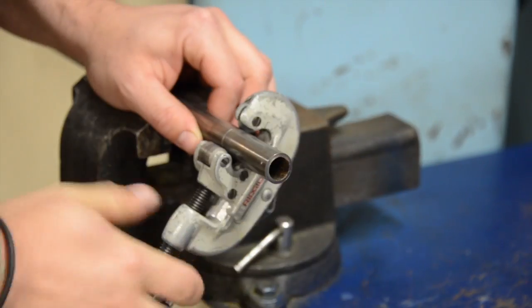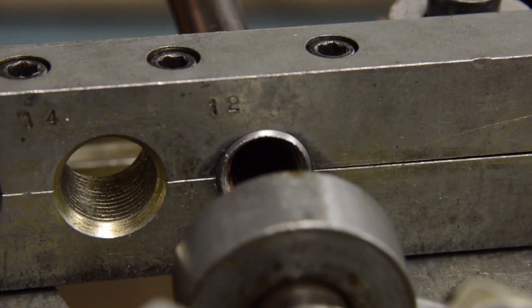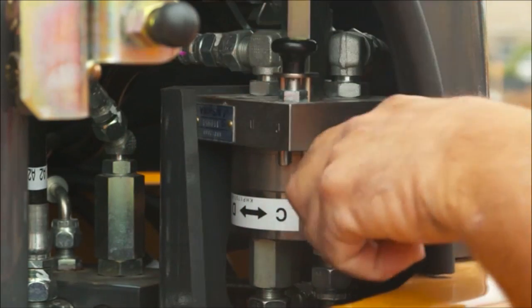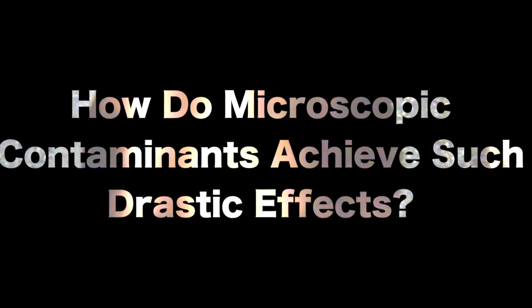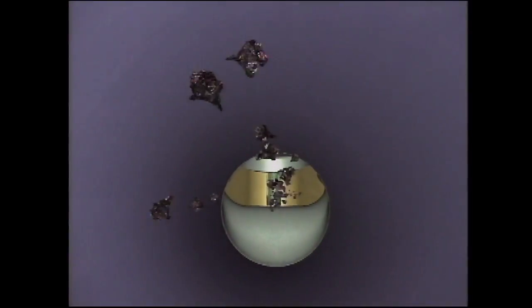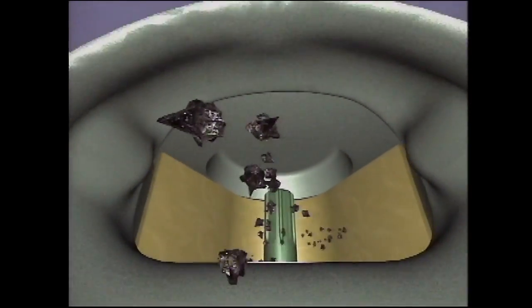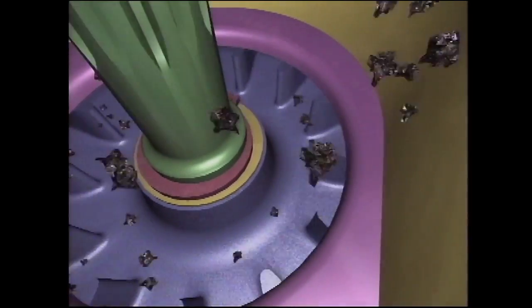Contamination enters metal tube assemblies during the cutting, deburring, bending, and flaring processes. Hoses and tubes that are not cleaned before installation will have a detrimental effect on any hydraulic system they are being installed on. How do microscopic contaminants achieve such large and drastic effects? Contaminants do not have smooth edges — they are irregular in shape and have sharp edges that cause abrasion as they scrape metal surfaces, creating additional contaminants. Let's follow contaminants in the hydraulic oil as it is drawn from the tank through the hose to the pump. You can see the contaminant's irregular shape with sharp edges and corners.